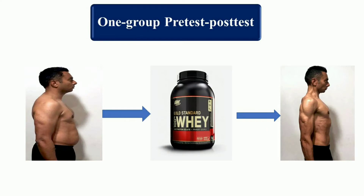For example, we observe a man before treatment, then administer a treatment in the form of taking protein powder, and after the treatment the man became much stronger and his muscles became strong. We can understand the effect of the treatment by conducting pre- and post-test conditions. However, we cannot ensure that this change is due only to taking protein powder, and there is also no comparison group to which we can compare the experimental group.